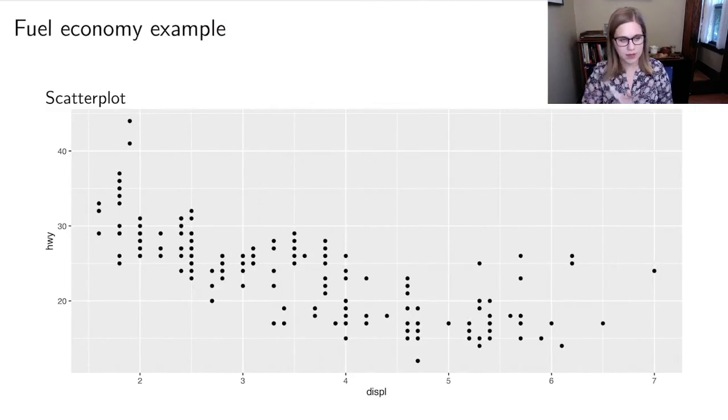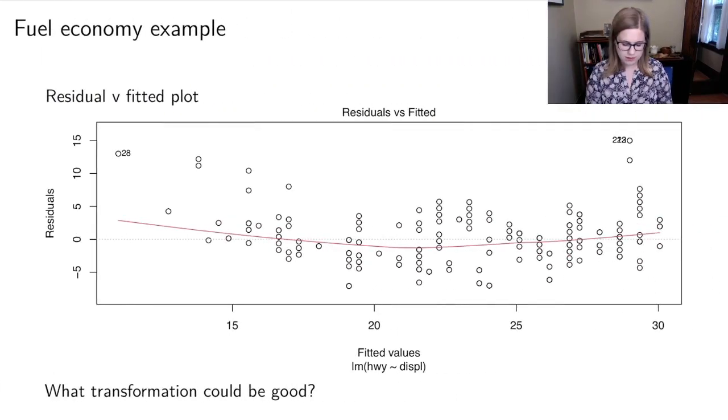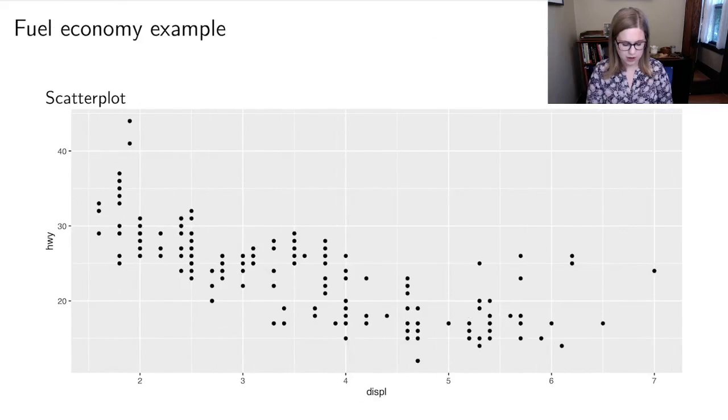So I've got an example here where I'm trying to predict the highway fuel economy of some cars based on the displacement, sort of the size of their engine. Here's the scatter plot. We could kind of think about linearity here, but I've also got the residual versus fitted plot. We can see that that red line doesn't look linear. So then the question is, what transformation could be good? What we want to do is look at our scatter plot and see what it most looks like in terms of Tukey's bulging rule.